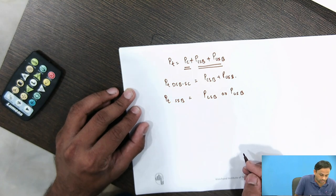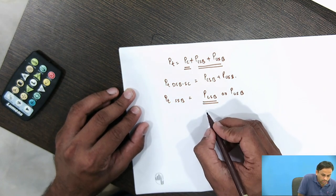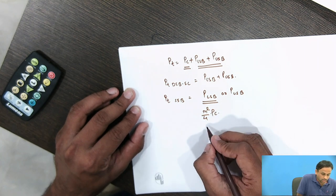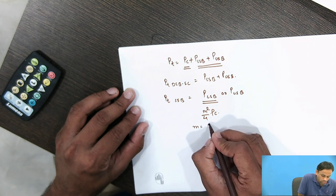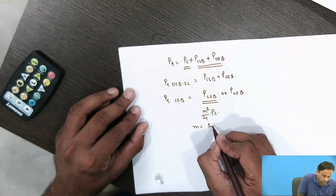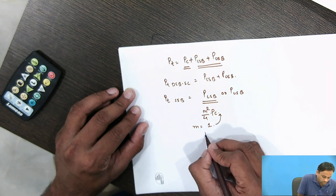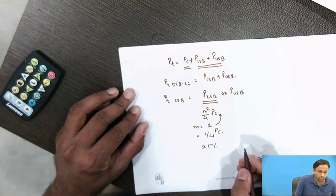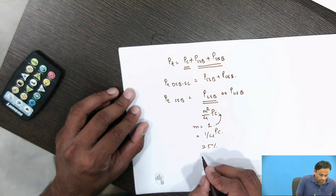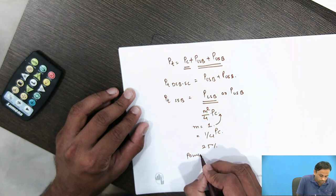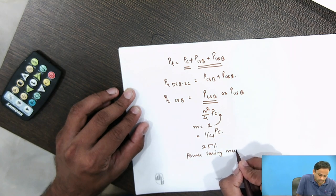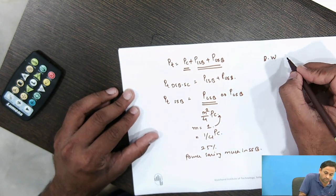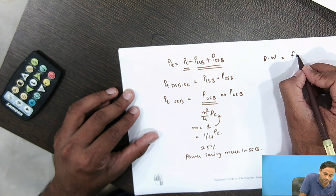In SSB, total power is just P_LSB or P_USB — whichever sideband we use to transmit. The power required is (m² / 4) × Pc. When m = 1, this gives (1/4) × Pc, meaning only 25% of the total carrier power Pc is needed to transmit an SSB signal. So the power saving in SSB is significant. Bandwidth required is only fm.